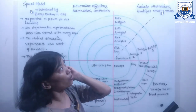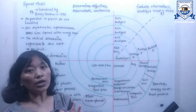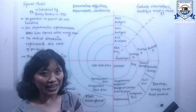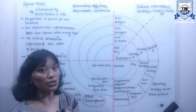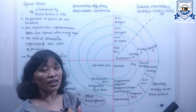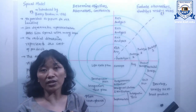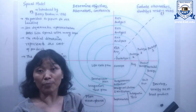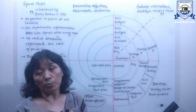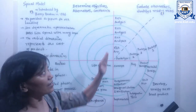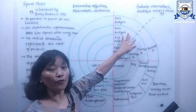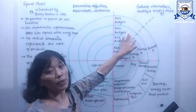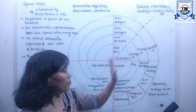In the second quadrant, all the possible solutions are evaluated to select the best possible solution, and the risks associated with that solution are identified and resolved with the help of the best possible strategy. At the end of this quadrant, a prototype is built for the best possible solution.